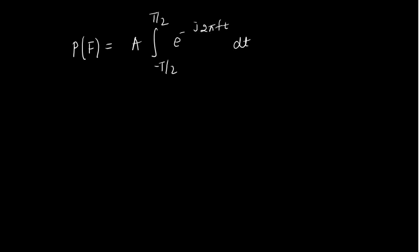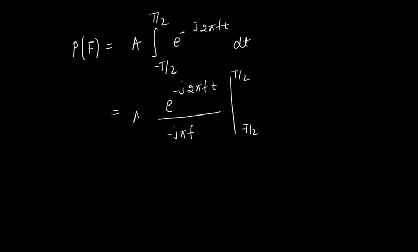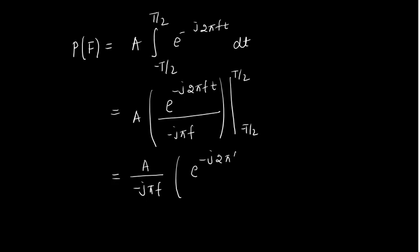So P(F) = A times the integral from minus T/2 to T/2 of e^(−j2πFt) dt. If we integrate this, the integration of e^(−j2πFt) dt gives us the result evaluated at the limits minus T/2 to T/2, with A outside.